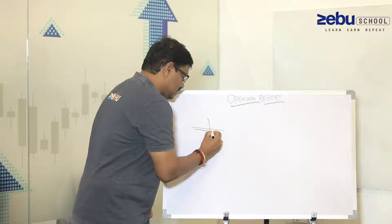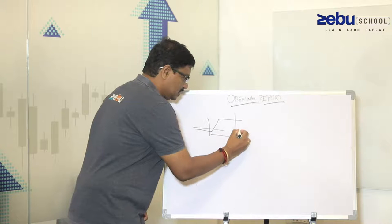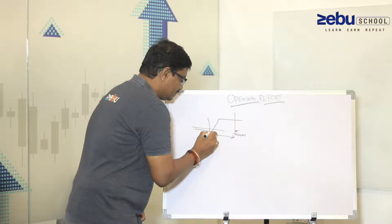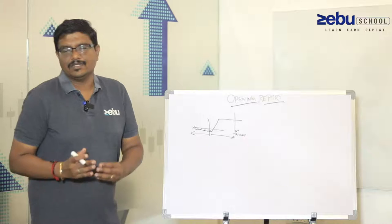My view is very simple: small risk on the downside. I'm expecting somewhere here the market to come. Once it comes here, I may be initiating my short. If not, just let it down with a very small risk.